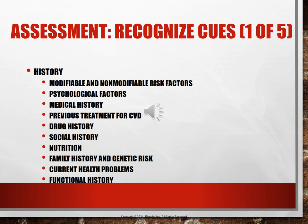Modifiable risk factors are things people can change — such as exercise habits, smoking, alcohol, and drug use. Non-modifiable risk factors are things that cannot be changed, such as age, ethnicity, and race.